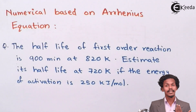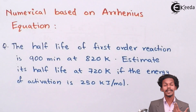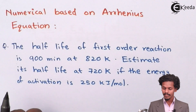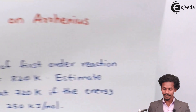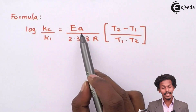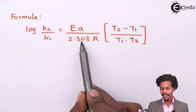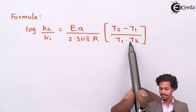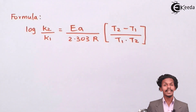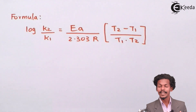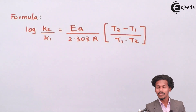For that, we have a formula based on the Arrhenius equation for activation energy: log of K2 divided by K1, which equals EA (activation energy) divided by 2.303 into R, multiplied by (T2 minus T1) divided by T1 times T2. Here T2 and T1 are the temperatures used to find the rate constants of the reactions.